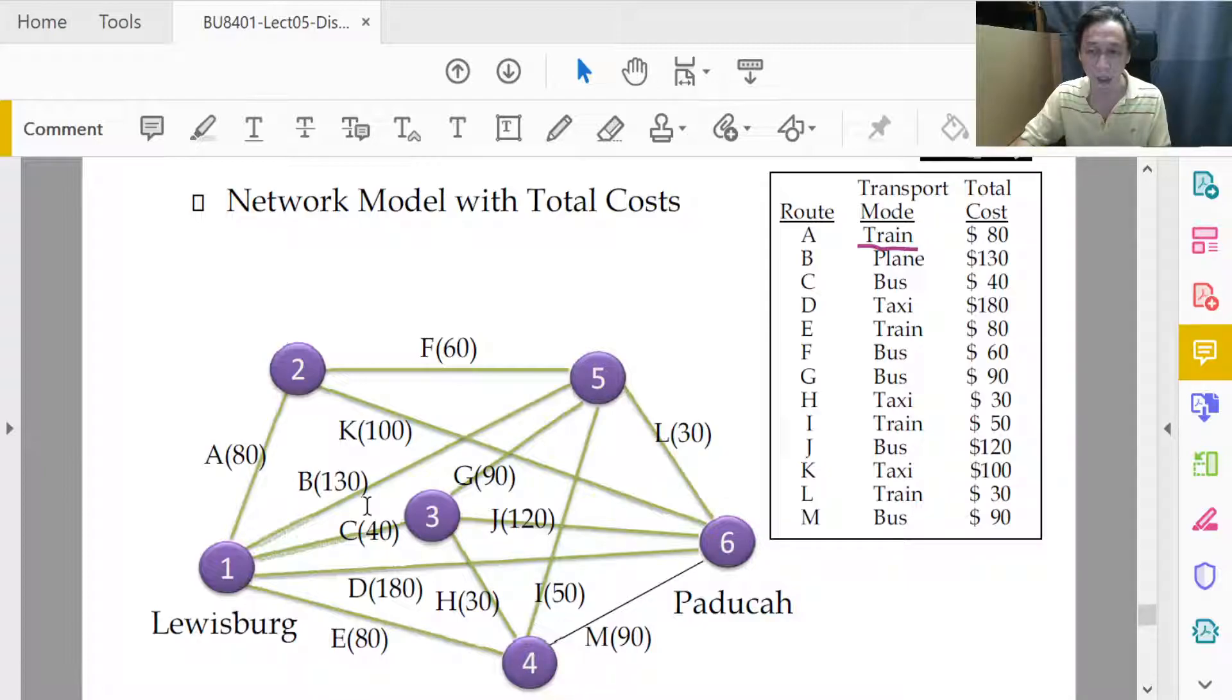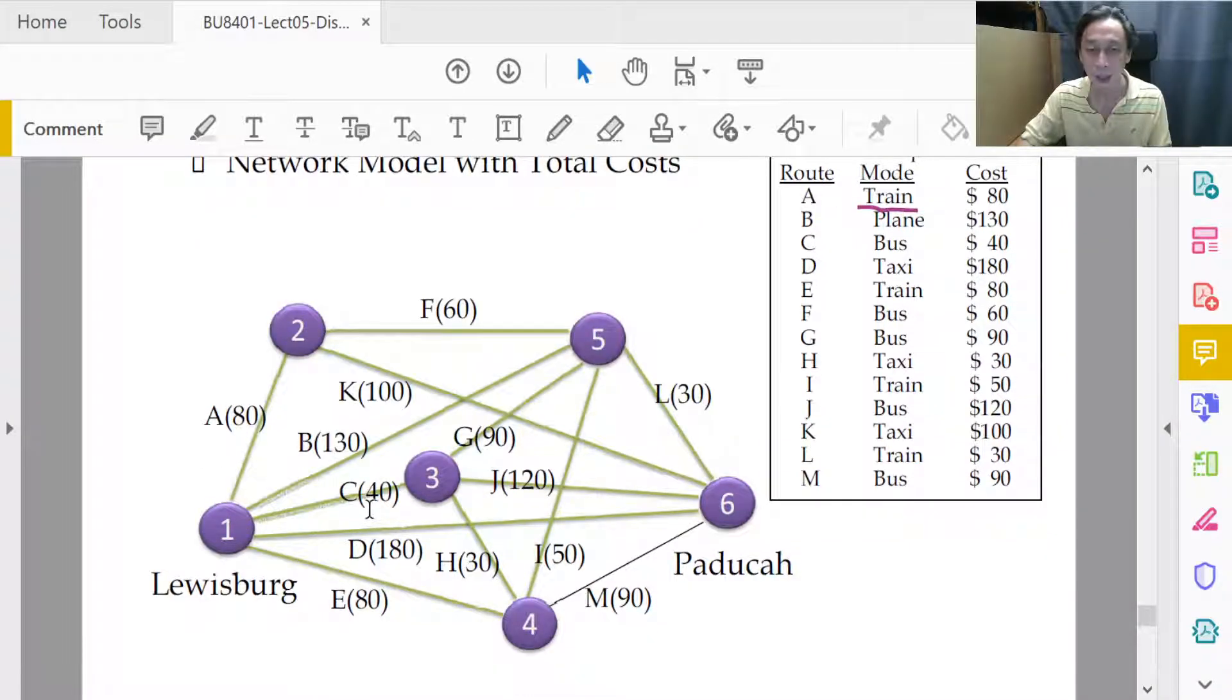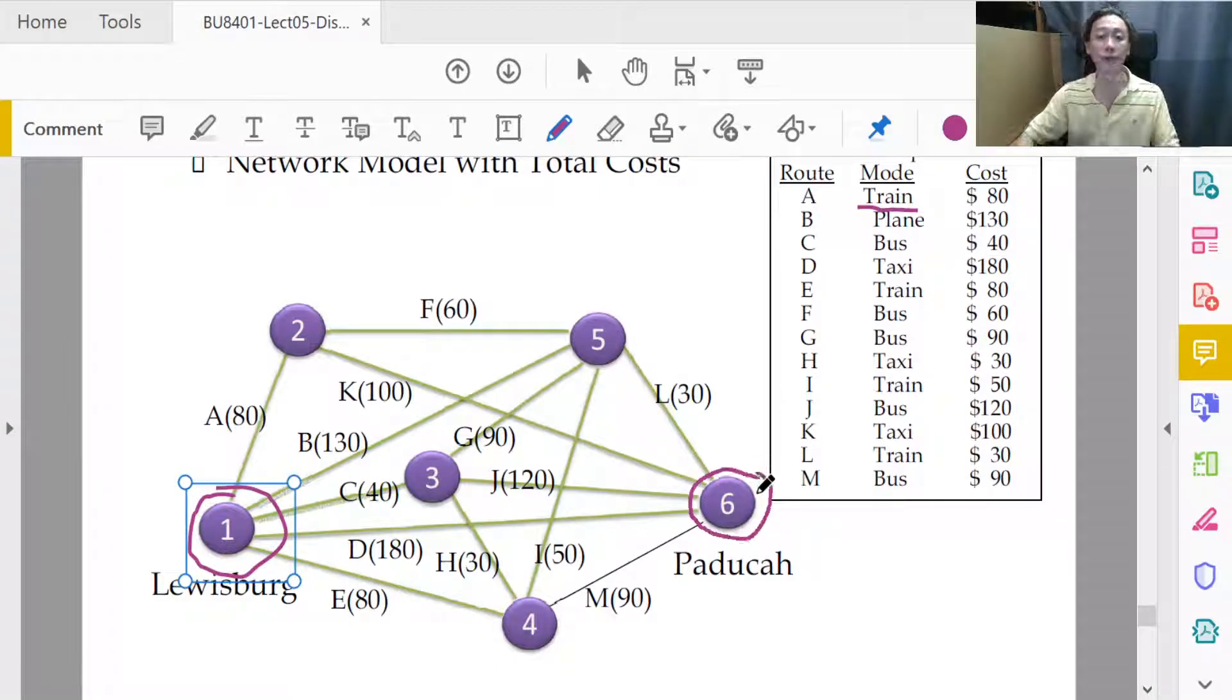Once we summarize the costs and have the diagram already in place and identify which is the starting node, node 1, and which is the ending node, node 6, then we are done because what we want is the shortest path connecting 1 and 6. We have all the costs, we have all the interlinks, and then we are done.